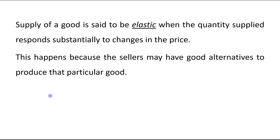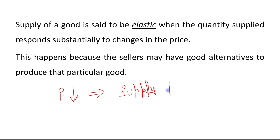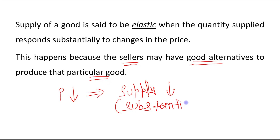When a good is taxed, price received by the sellers decreases — we have already seen in our previous videos that when a good is taxed, price received by the sellers decreases. So supply will also decrease. In this case, supply will decrease by a large amount because the sellers are having good alternatives to produce that particular good. Supply will decrease by a substantial amount, and in this case we say that the supply of a good is elastic.